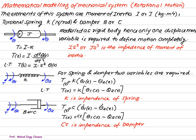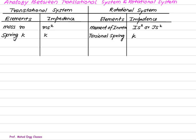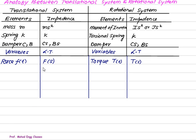Now for the analogy between the translational and rotational systems, we divide both into elements and impedances. In the translational system, mass M has impedance Ms². In the rotational system, moment of inertia J has impedance Js², making them analogous quantities. For the spring, the translational system uses a linear spring and the rotational uses a torsional spring, but in both cases the impedance is K. For the damper, represented by B or C, the impedance is Bs or Cs in both cases.